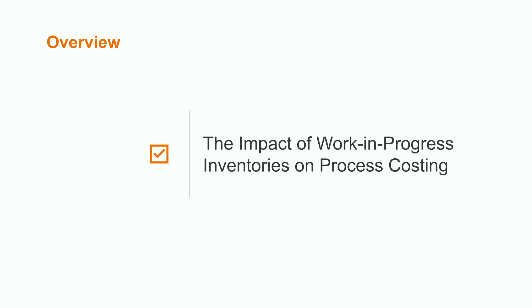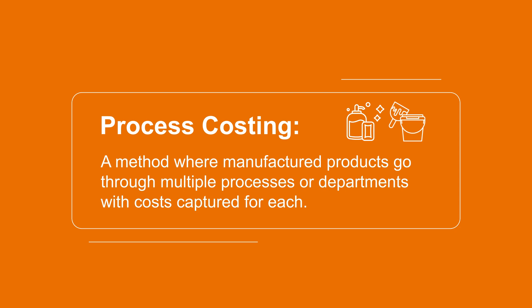we are going to cover the basic concept of impact of work-in-progress inventories or process costing. Process costing is a method wherein the products we manufacture go through multiple processes or departments. Each department's costs are then added to the next department so that all the costs can be finally allocated to the units produced.